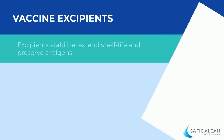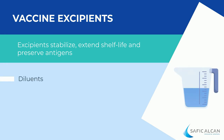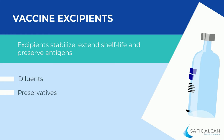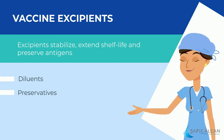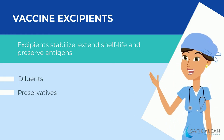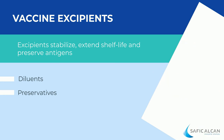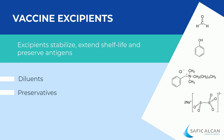Let's move to the excipients used to stabilize the vaccine, extend the shelf life, and preserve the antigens. Diluents are used to obtain the desired concentration just before use — sterile water is commonly used. Preservatives avoid any contamination once the vial is opened, especially when vaccinating several people. The most commonly used are formaldehyde, the phenol family, benzalkonium chloride, and sodium metabisulfite.